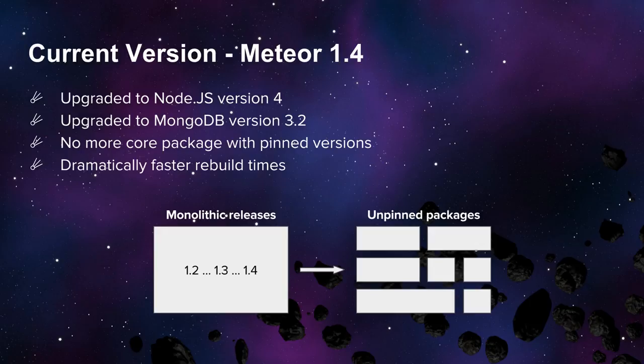Also, they upgraded the version of MongoDB from version 2.6 to version 3.2. From lots of help from the community, and after MongoDB proved itself stable on version 3.2, Meteor finally did it. And now it also uses the WiredTiger engine, which is much, much, much faster than the previous one.